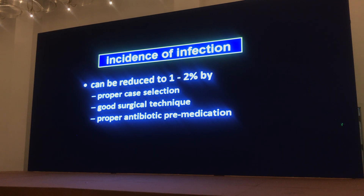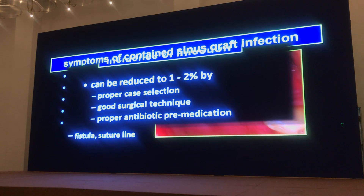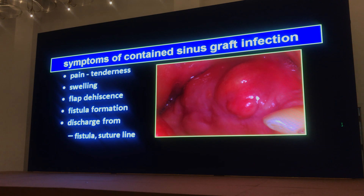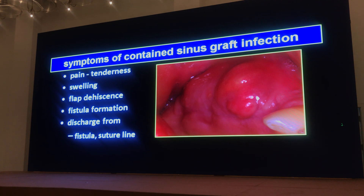We'll talk about case selection. It involves starting out with sinuses that are healthy. We all know what a post-operative sinus graft infection would look like — it would look something like this. In its worst form, it could involve just a fistula with drainage and the patient complaining of discomfort in the area of the surgery.